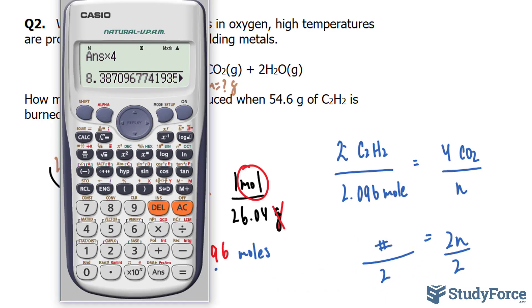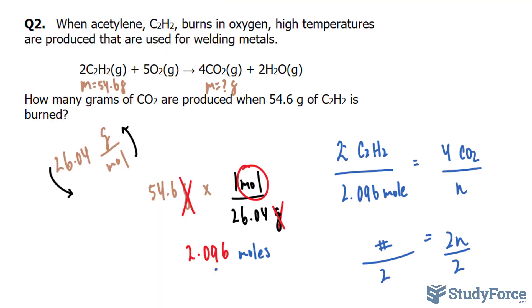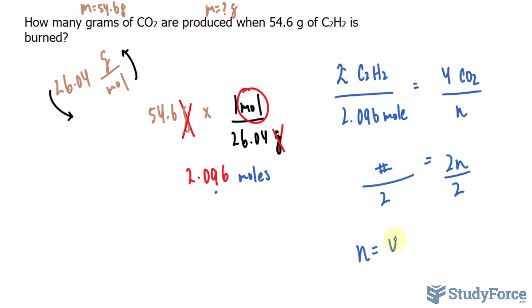So whatever that number was that was on our calculator, divide by two. And now we can round this number to three significant figures, 4.19. N is equal to 4.19 moles of CO2.